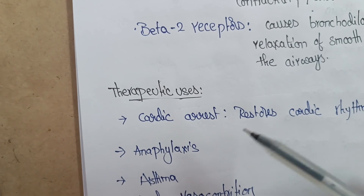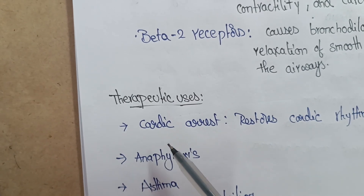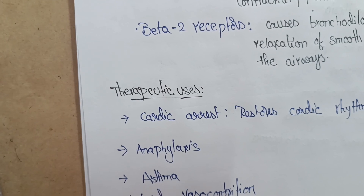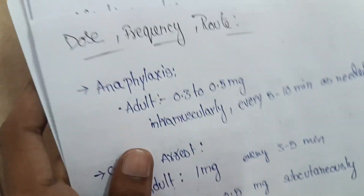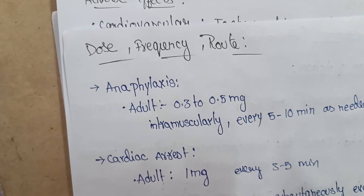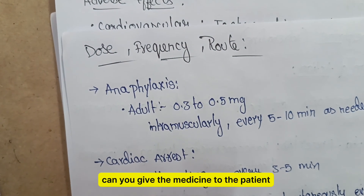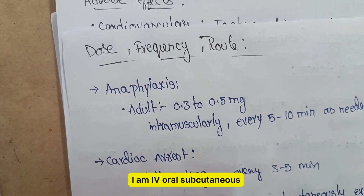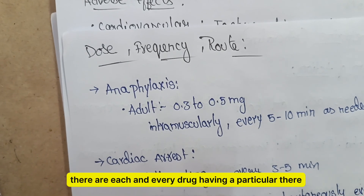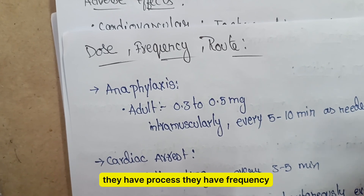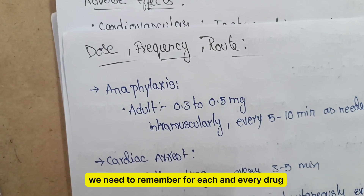After writing the mode of action, we need to write the uses of the drug. For adrenaline (epinephrine), the uses include: cardiac arrest, anaphylaxis, asthma, and local vasoconstriction. After that, we need to write dosage, frequency, and route. The dosage and frequency should be written properly, and the route — how to give the medicine to the patient: IM, IV, oral, subcutaneous, etc. Each drug has a particular dosage, frequency, and route, which vary from drug to drug.